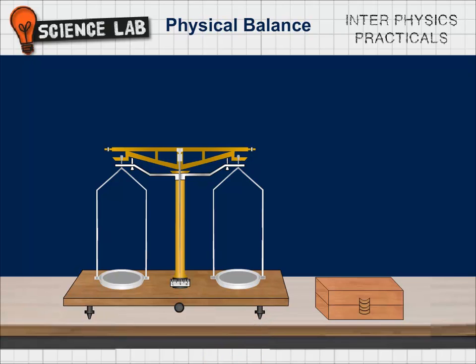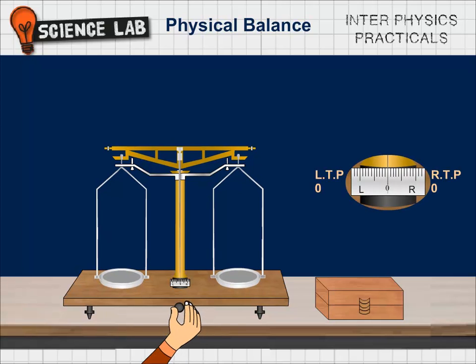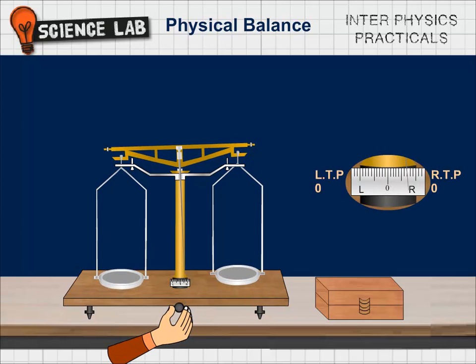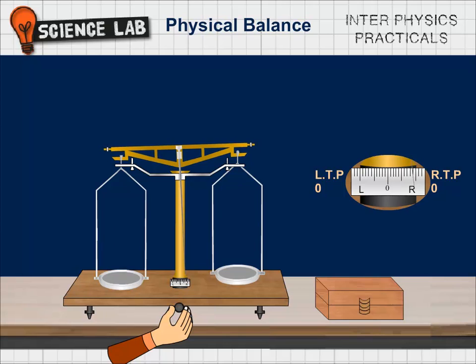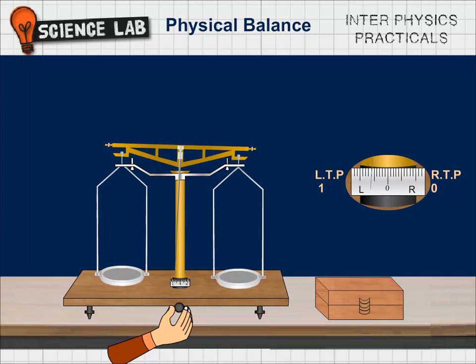To find the ZRP of the physical balance, the pans of the physical balance are kept empty and the physical balance is made to oscillate. Rotate the knob, the beam of the physical balance moves upwards and the physical balance starts oscillating freely. The extreme readings of the knife pointer on the ivory scale are known as turning points.